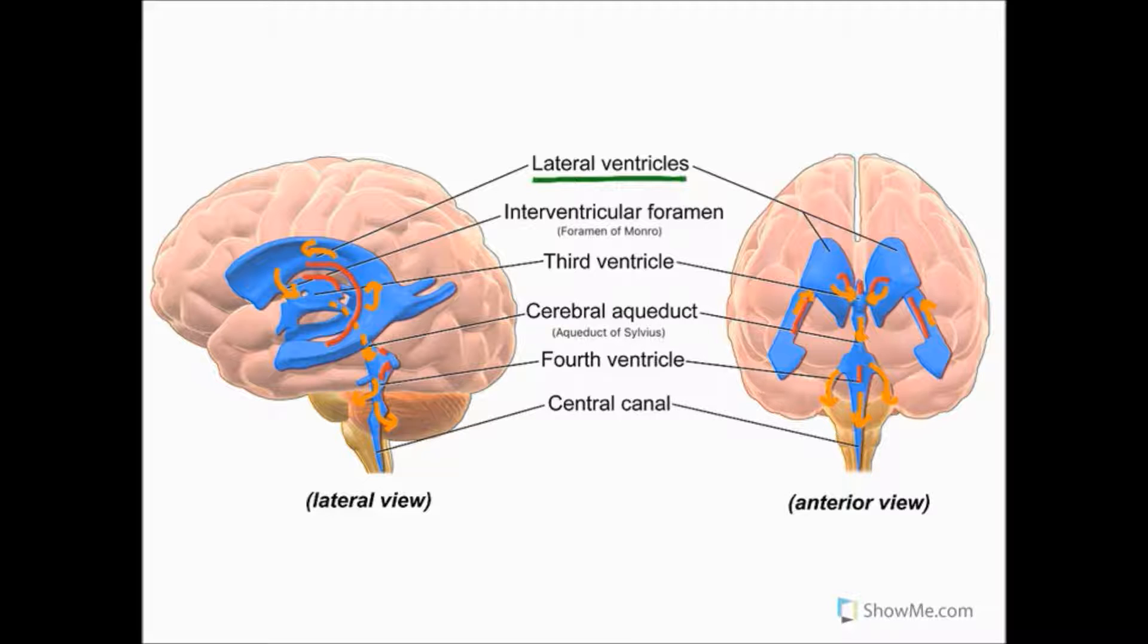Each foramen of Monroe connects a lateral ventricle to the central third ventricle. The third ventricle is a small slit found between the two thalami. We can also see here in the left diagram the interthalamic adhesion connecting the two thalami and that it runs through the third ventricle.